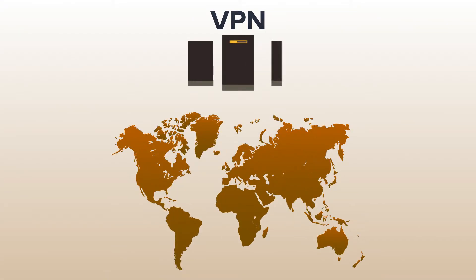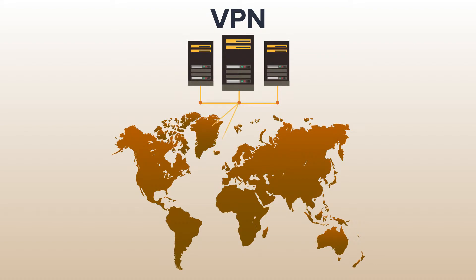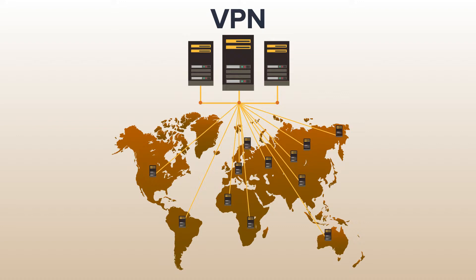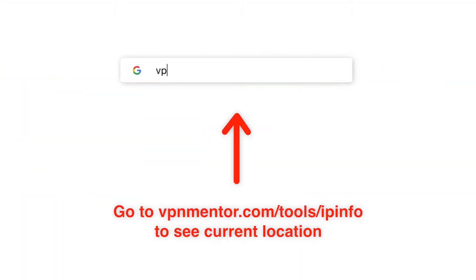Changing your IP address to the country you want is really simple — all you need is a good VPN. A VPN is software you download that reroutes your internet traffic to a remote server. Simply connect to the country you want and your IP address will appear as if it's coming from that country.